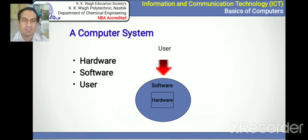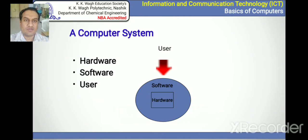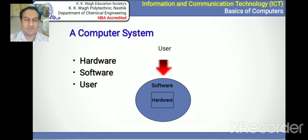A computer system consists of three elements: hardware, software, and user. The user is nothing but us — we are using the computer. Hardware means the physical components: monitor, keyboard, mouse, and CPU are the hardware. Software consists of components which are not physical but virtually control the activities on the computer system.